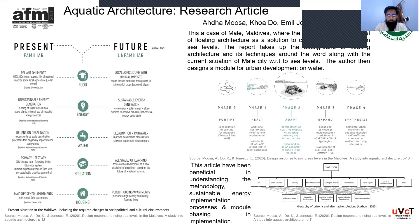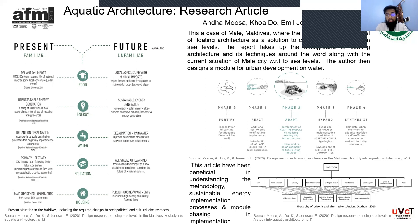One of the literature examples is an aquatic architecture research article by Adam Musa focused on the Maldives, where there is increasingly high sea level rise. She tried to address food, energy, water, and education in housing. For food, she proposed seaweed and algae. For sustainable energy generation, she proposed wave energy, solar energy, and algae biomass. For water, rainwater and desalination. She further categorized the whole process into phases.